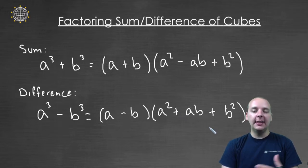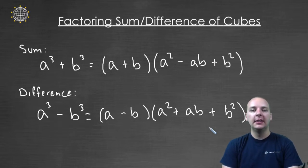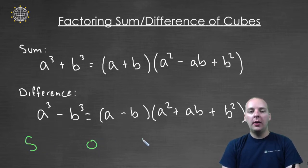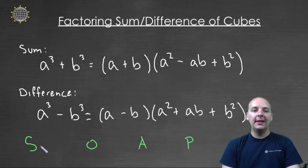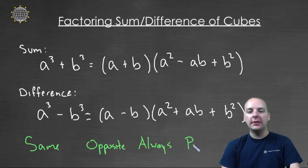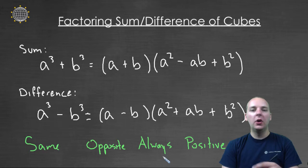If you're thinking that's a lot to memorize just for a special factoring form, I've got a nice easy way to remember how all of those signs work. Just remember the word SOAP — S-O-A-P. The S stands for same, then O for opposite, and then AP stands for always positive.